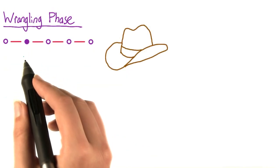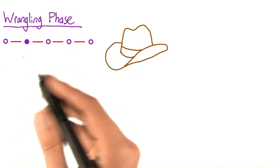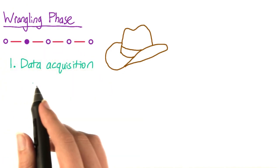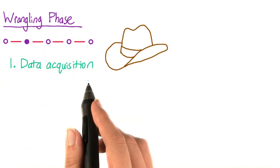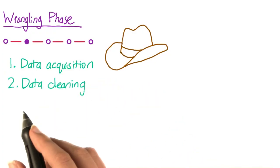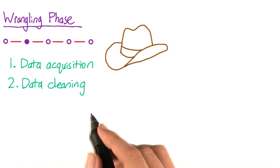The next step of the process is data wrangling, and this really has two parts: data acquisition and data cleaning. First, you need to acquire the data that you need to answer your question or solve your problem. Then it's time to begin investigating the data and cleaning up any problems that you find.